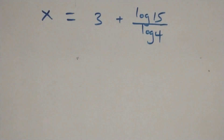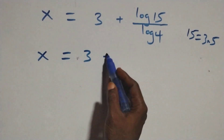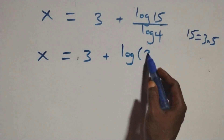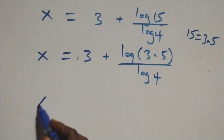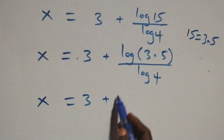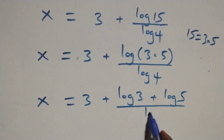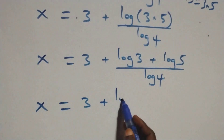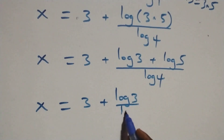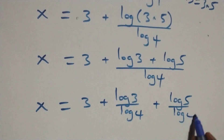In the next step, fifteen can be derived as three times five. So x equals three plus log of three times five over log four. Applying the product rule of logarithms gives x equals three plus log three plus log five over log four. Separating: x equals three plus log three over log four plus log five over log four.